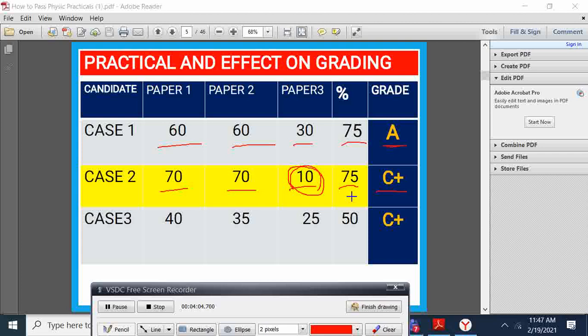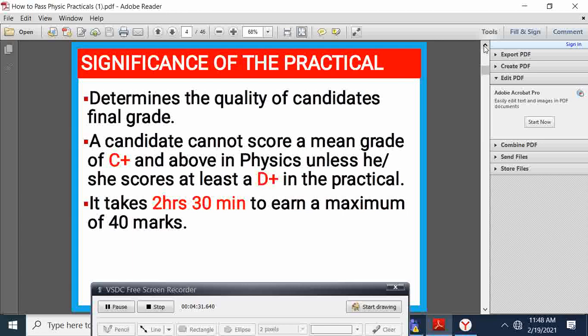Case 3, I have a student who has scored 40, 35 in paper 2, and 25, scores 50, gets a C plus. The same as the one who had 75 but failed in paper 3. That's what I meant in the earlier statement: a student cannot go above a C plus if you cannot score at least a D plus in the practical.